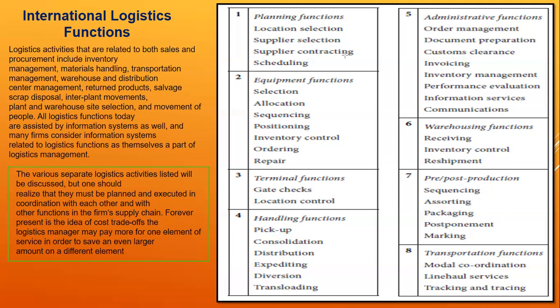The trade-off concept should be used in such a way that process implementation is done correctly. The planning functions include location selection, supplier selection, supply contracting, and scheduling. At the initial level, when setting up a factory, the first priority is to select the location, then supplier selection, then supplier contracting and scheduling — determining when the supplier will provide the material. Negotiations are also part of supplier selection.